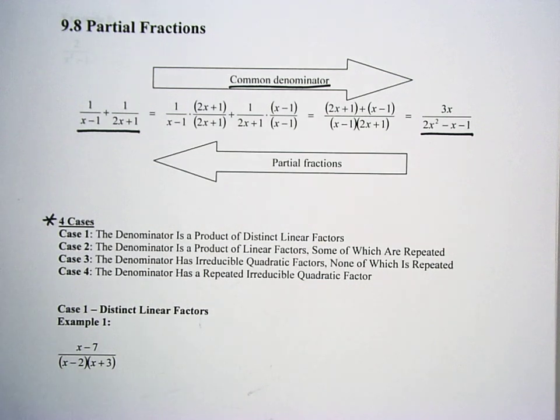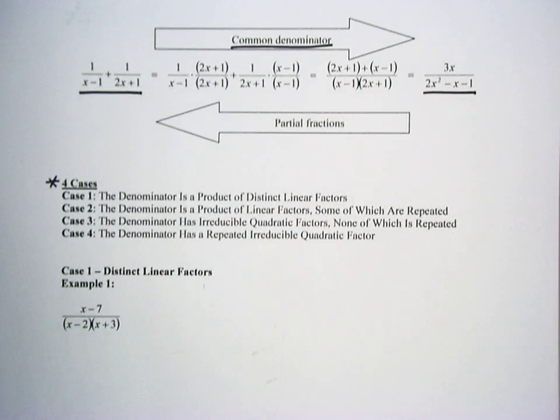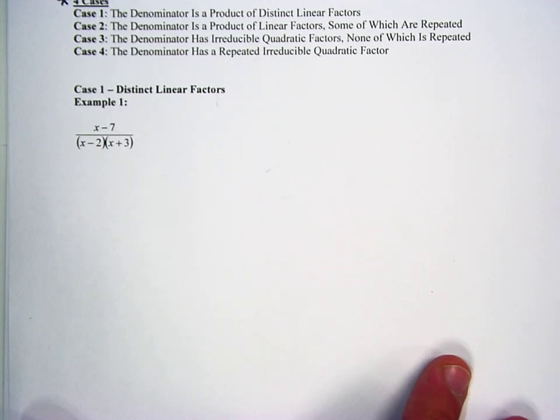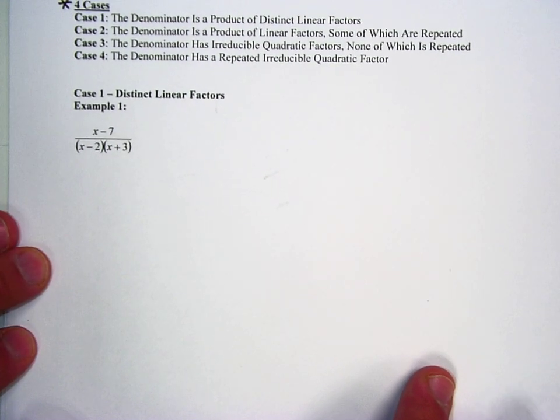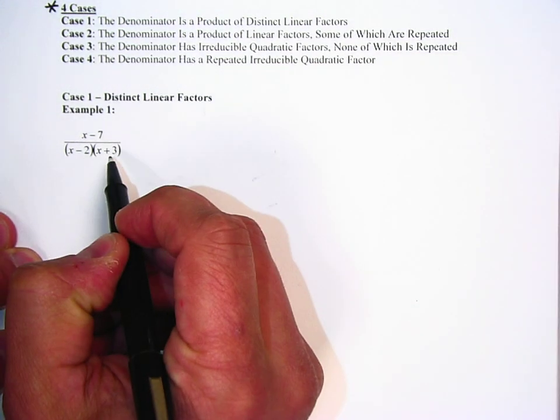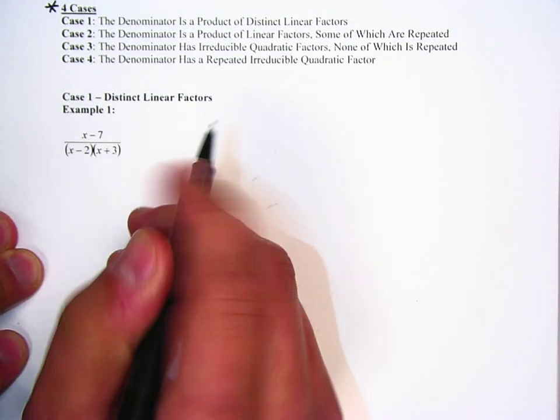So it's going to be just a process, and we're going to go slowly step by step through this, and we're just going to start here with example one. So in example one, the first thing that we're going to want to do is factor the denominator. And this is already factored, so we're good on that part.